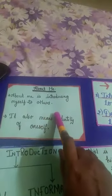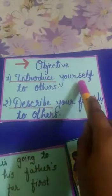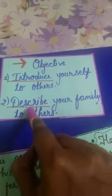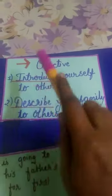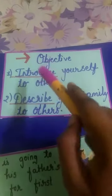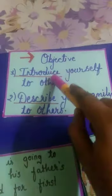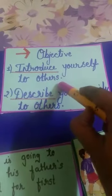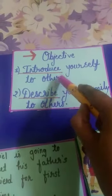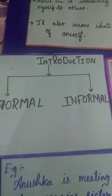After knowing what is about me, we have two objectives of about me: introducing yourself to others, and describing your family to others. First we have to introduce ourselves, then we have to describe our family to others. This objective depends on the person whom you are meeting. We have two types of introduction — formal introduction and informal introduction.